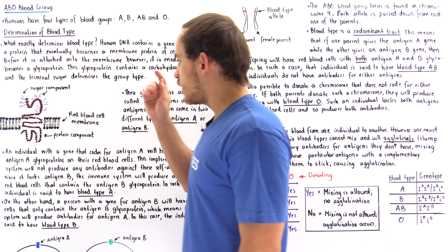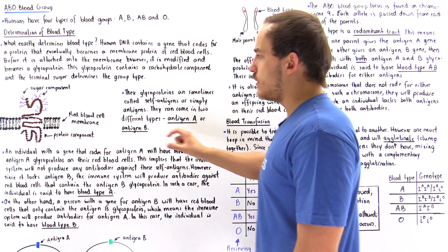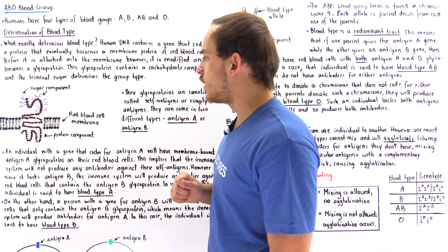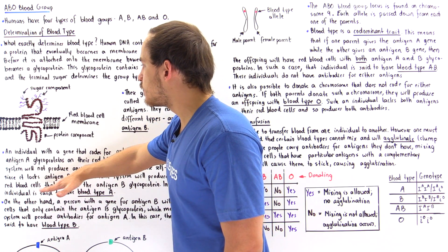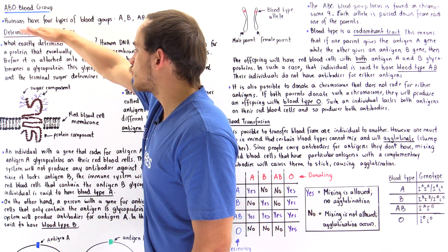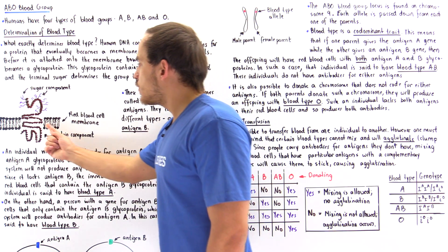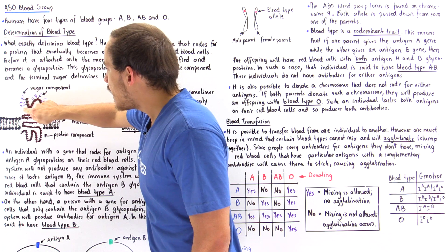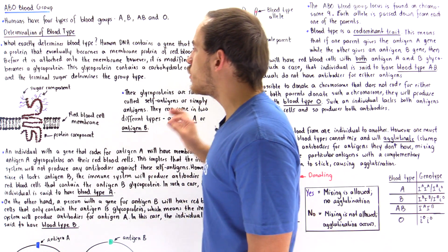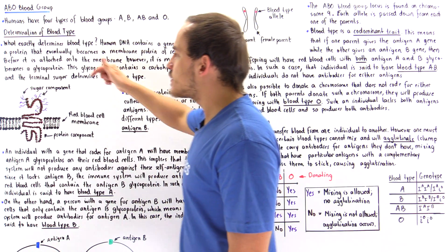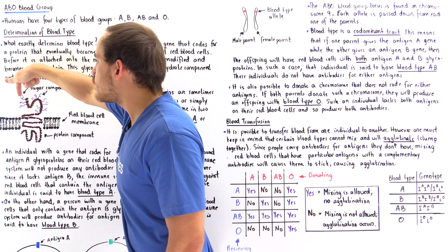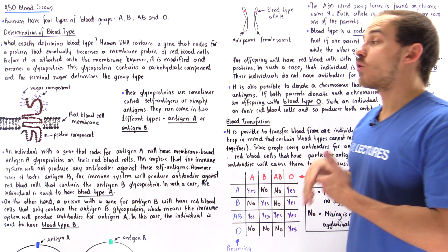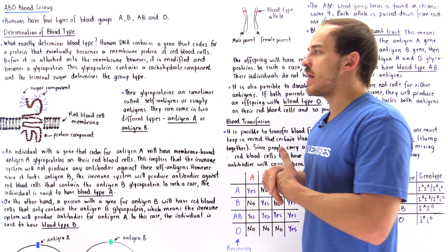Let's take a look at the following diagram. We have the phospholipid bilayer of the red blood cell — the cytoplasm portion and the extracellular matrix. This is the protein component of the glycoprotein, and these purple extensions are the sugar components. It's the terminal sugar of that glycoprotein that determines the blood type of our individual.